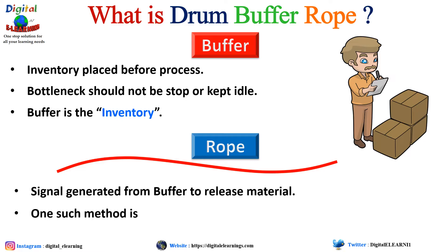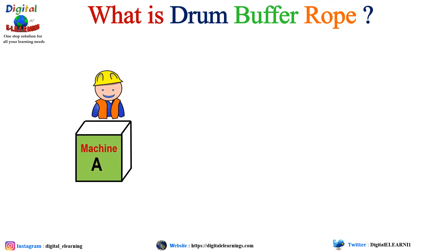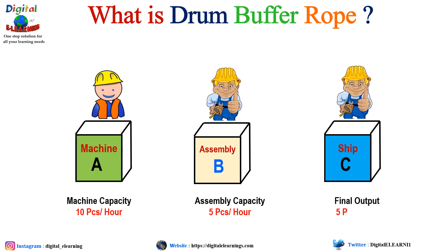One such method is the pull system in lean manufacturing. Now let us see this with a practical example. We have three machines: Machine A, Machine B which is the assembly line, and Machine C which handles final shipment to the customer. Machine A has a capacity of 10 pieces per hour, Machine B has a capacity of 5 pieces per hour, and final shipment cannot exceed the bottleneck — Assembly Line B — at 5 pieces per hour.